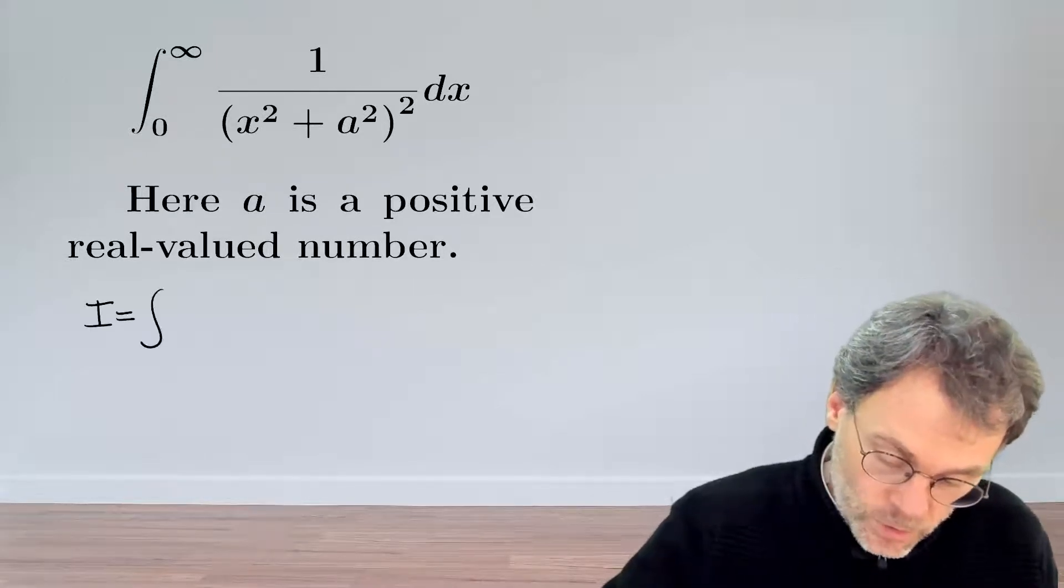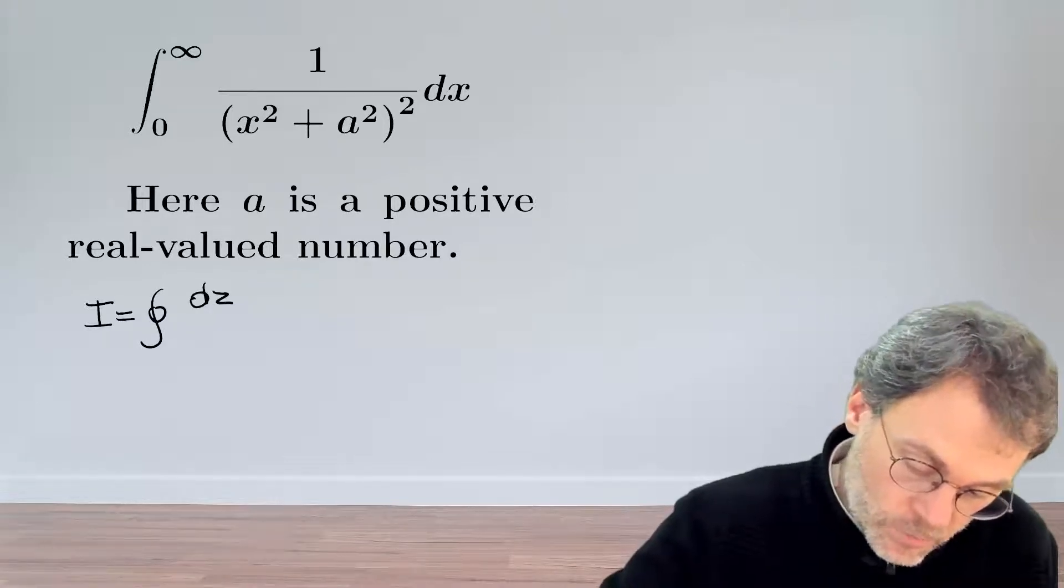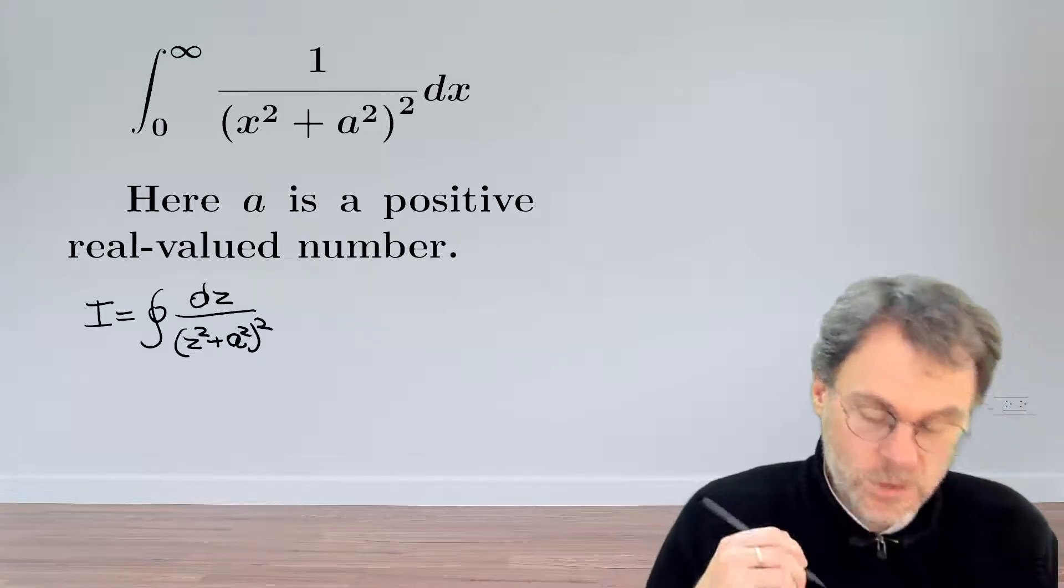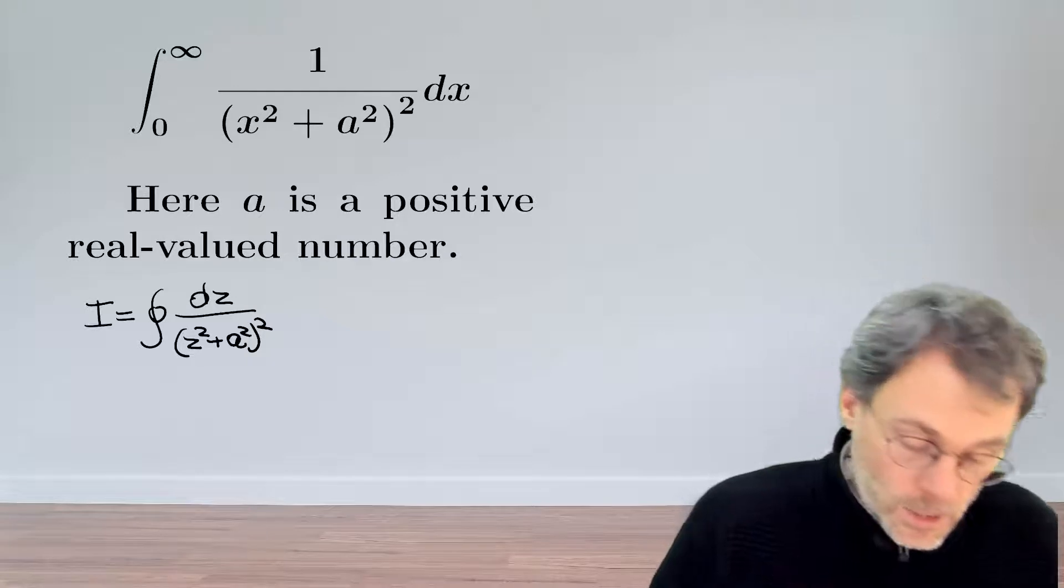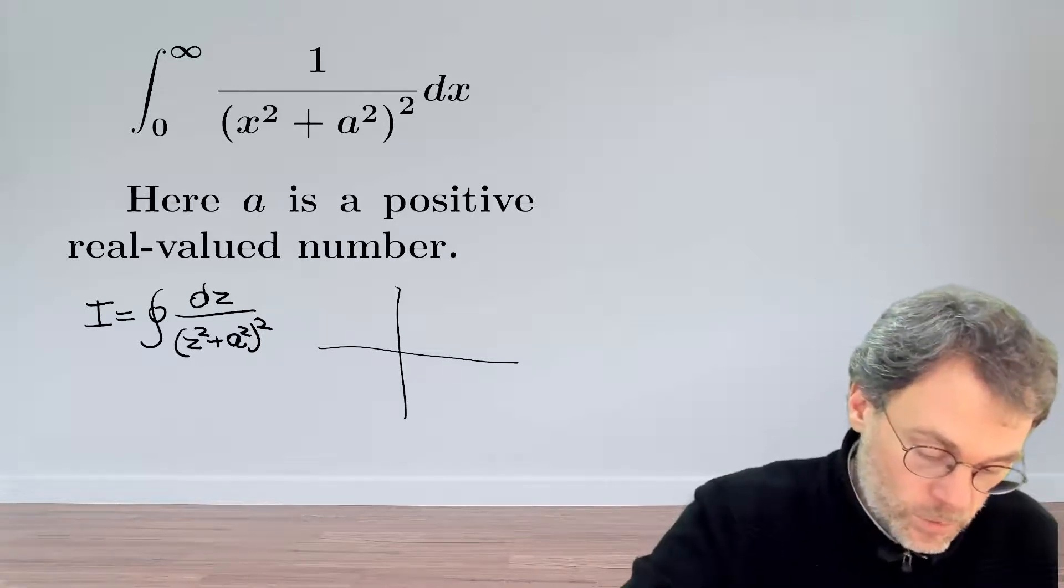Now in this case it's pretty straightforward. Let's just replace x by z everywhere, then we get this integral here. So z squared plus a squared squared. In terms of contour, very important of course is that we include the positive real axis because that's the part that we're interested in, right, from zero to infinity.